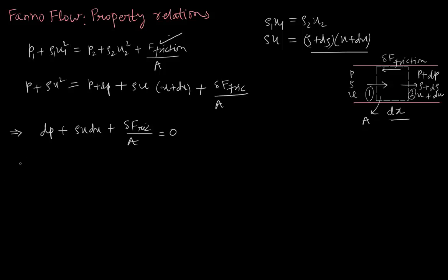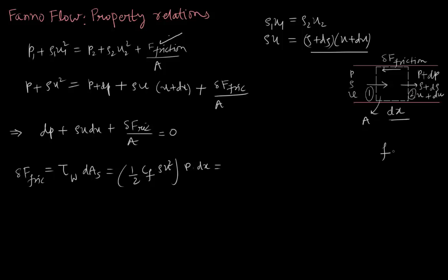Since we have modeled the friction force as a shear stress, we can write delta_friction equal to shear stress tau_w times surface area dS. We know the wall shear stress as one-half times coefficient of friction cf times rho times u². dS is perimeter P times dx. The friction factor f is 4 times the coefficient of friction cf. Hence we can write it as one-half times (f/4) times rho*u² times perimeter P times dx.